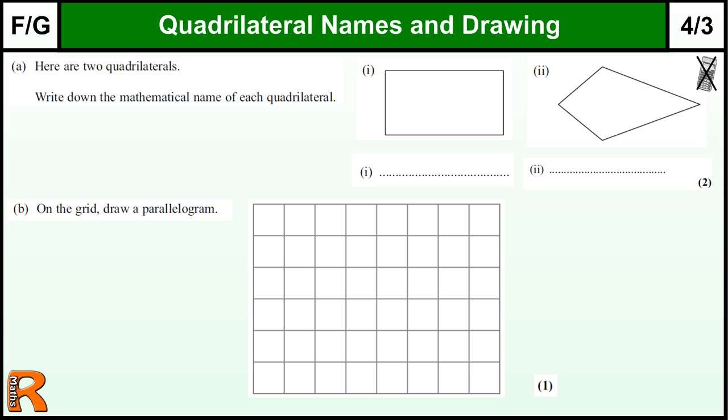Naming and drawing quadrilaterals. Here we have two quadrilaterals. Quadrilaterals are four-sided shapes, quad meaning four, lateral sides.